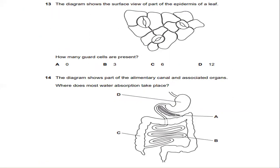Number 13. The diagram shows the surface view of part of the epidermis of a leaf. By theory, we already studied that each stoma is surrounded by a pair of sausage shape called guard cells. So we can see that there are a total of three stomata. Each stoma is surrounded by a pair of sausage shape called guard cells, which can open and close the pore, which contain chloroplasts. A leaf consists of two guard cells. If it consists of about three stomata, so the total number of the guard cells present in this situation is about six.